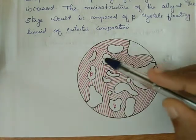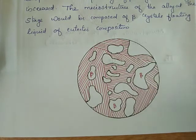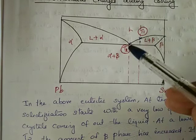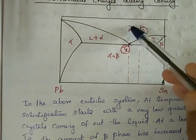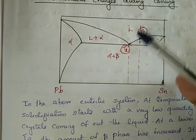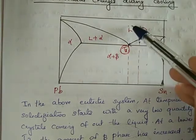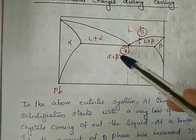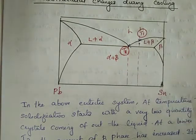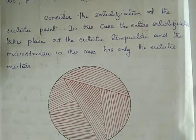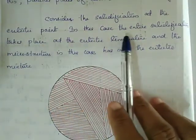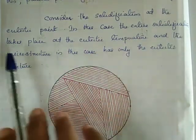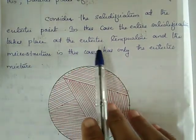Liquid (L) is directly converted to alpha plus beta. We have beta prime. In the liquid region, the alpha plus beta layered structure is formed. Consider solidification at the eutectic point — in this case, the entire solidification takes place at the eutectic temperature.